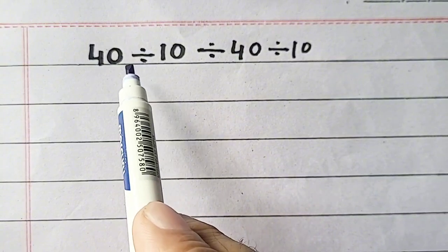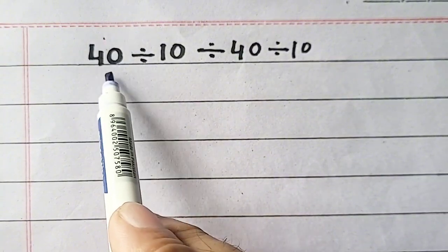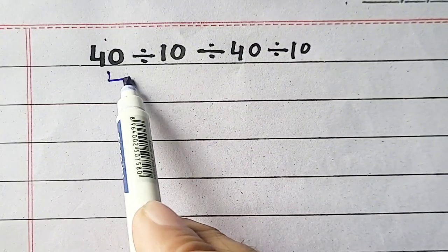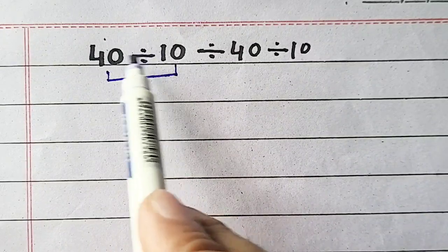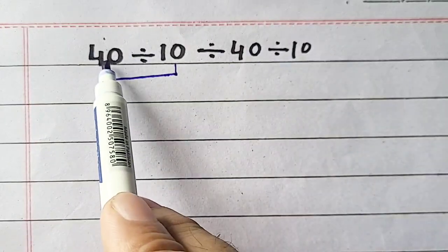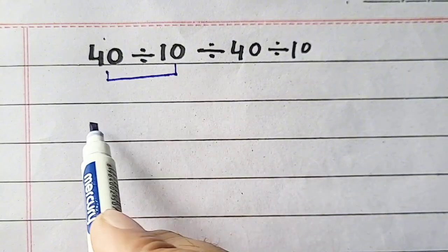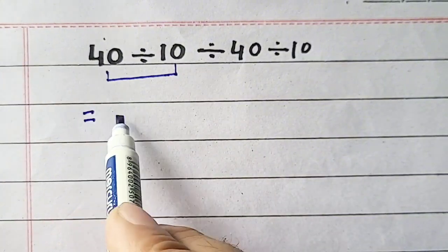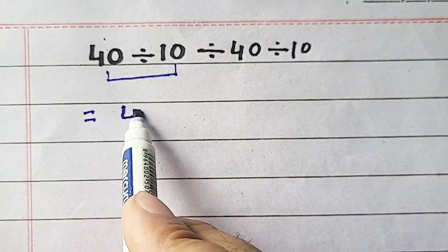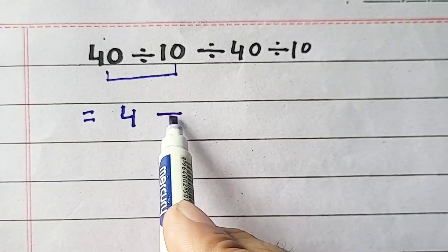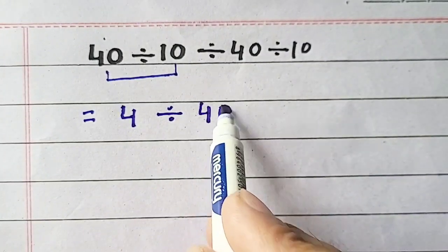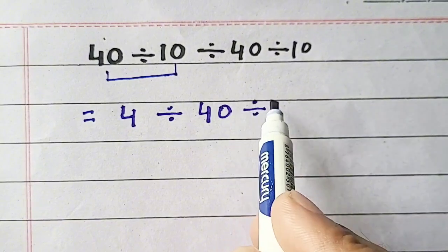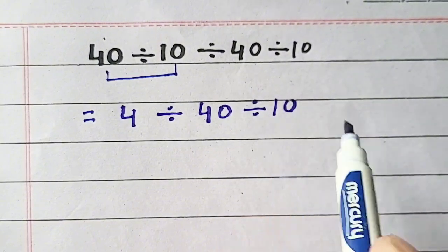So we will start from left to right and first of all we will perform the function of division from left to right. So 40 divided by 10 will be equal to 4 divided by 40 divided by 10.